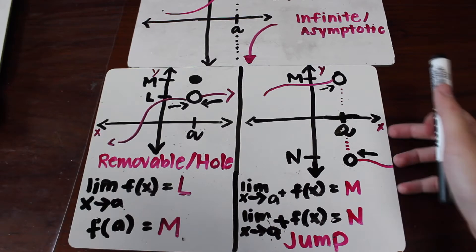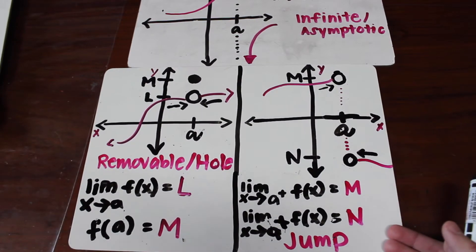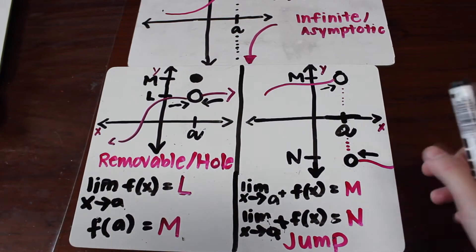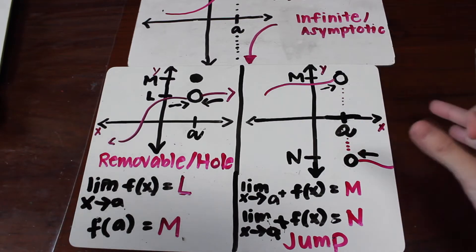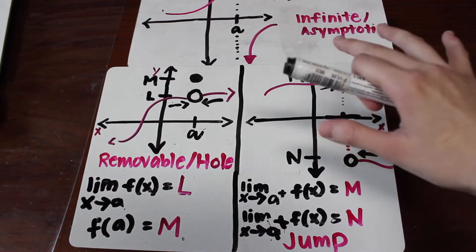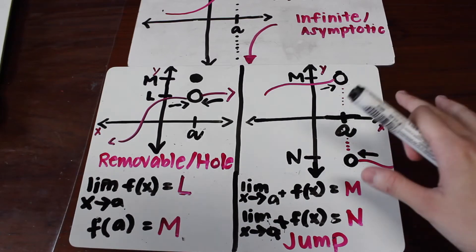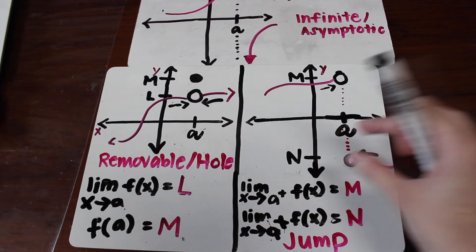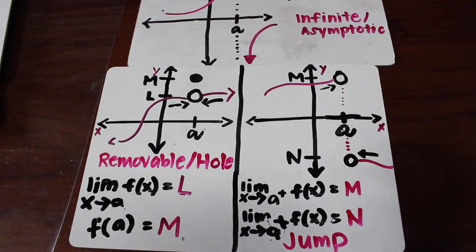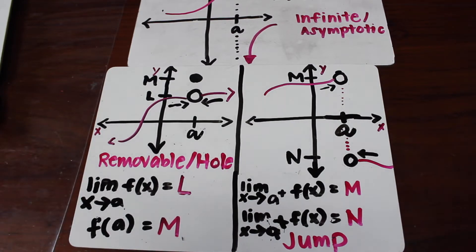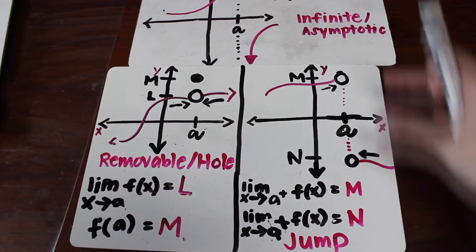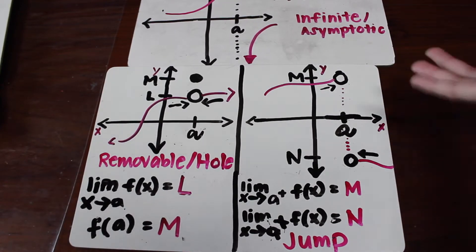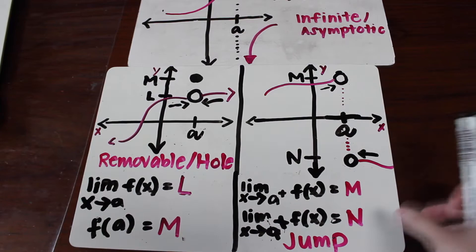The second type is the jump discontinuity. The limit doesn't even exist because as x approaches a from the left, it goes closer to m, but as x approaches a from the right, it approaches n. So if you solve for the left-hand and right-hand limit and they're not equal, then the limit doesn't exist. And just by looking at the graph, it looks like it's jumping — so it's a jump discontinuity.